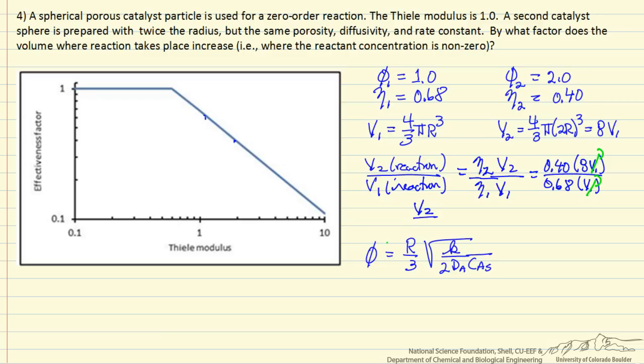V2 over V1, where a reaction is taking place, is equal to 4.7. And this is what we wanted to calculate. This is any place where there's a nonzero concentration, reaction is taking place for a zero order reaction.